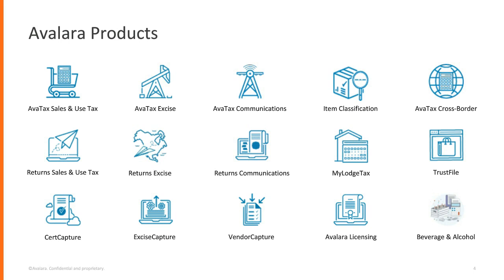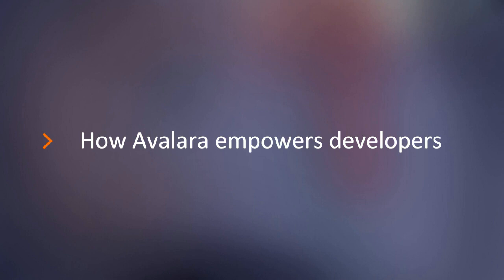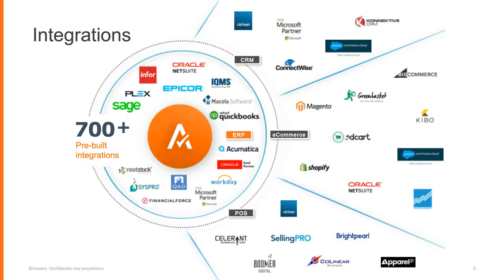Moving to slide five — what are we doing for developers? We feel developers are key to the success of any integration with our products. We've built more than 700 integrations for you, so if you're dealing with Oracle NetSuite, QuickBooks, Magento, or Shopify, we already have an integration built. You don't have to do anything — just go ahead and use those integrations and you're up and running in no time. We do have pre-built integrations if you're in one of those platforms, but let's say you're not and you want to build something custom.